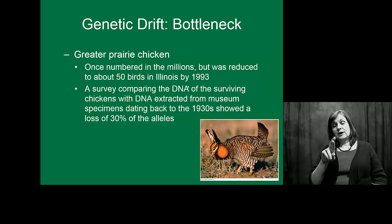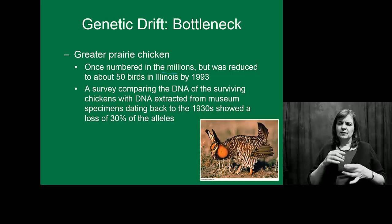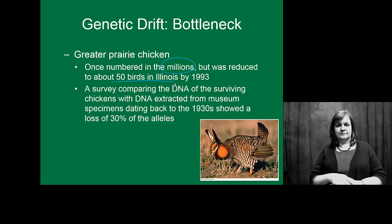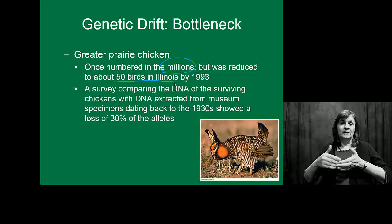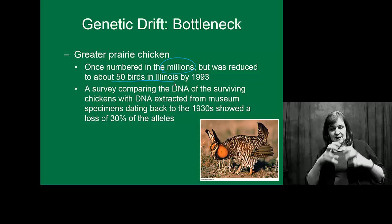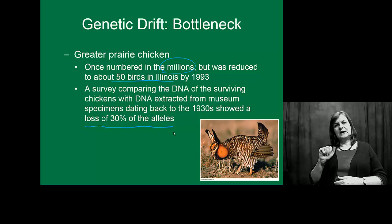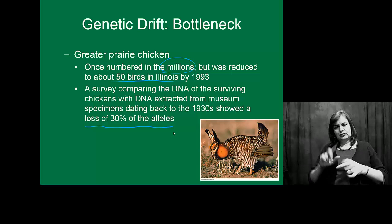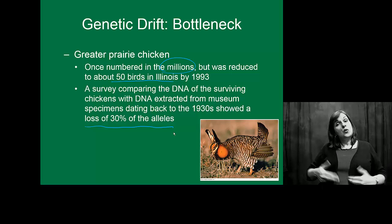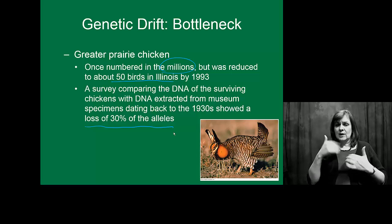The greater prairie chicken is one that has been studied extensively. They used to number in the millions, but in 1993 they counted only 50 prairie chickens in Illinois. A population that went from millions to 50 — that's a pretty significant bottleneck. They actually looked at the DNA of these surviving chickens and found they lost more than 30% of the original alleles in the population. The original variability was decreased more than 30% through this bottleneck. Imagine if the human population lost one-third of its variability — it certainly would be a different-looking population.